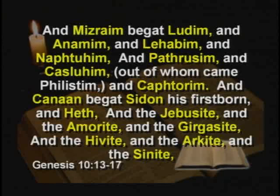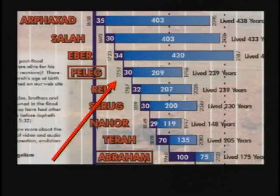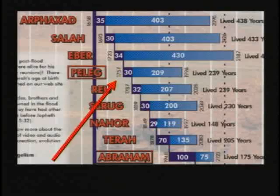Why does Genesis 10:25 mention Peleg specifically? Nobody else gets their brother mentioned. The word Jaktan means 'shorten' and Peleg means 'divided.' Peleg was born about a hundred years after the flood, but he only lived to be 239 — while his father and grandfather lived into their 400s. His lifespan was dramatically shorter. What happened in the days of Peleg? The pre-flood world had a canopy of water above and water under the crust of the earth.